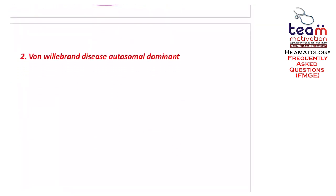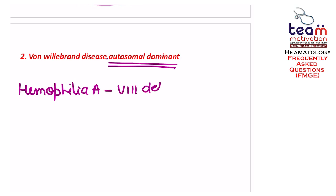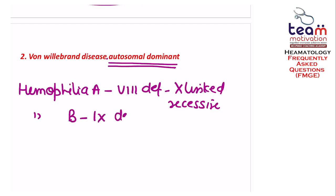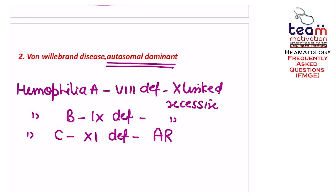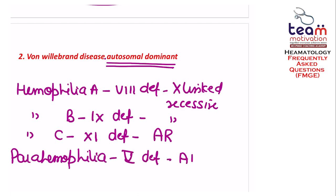The second question is the mode of inheritance of von Willebrand disease, and the right answer is autosomal dominant. For bleeding disorders: hemophilia A, due to clotting factor 8 deficiency, is X-linked recessive. Hemophilia B, factor 9 deficiency, is also X-linked recessive. Hemophilia C, factor 11 deficiency, is autosomal recessive. Parahemophilia — clotting factor 5 deficiency — is also autosomal recessive.